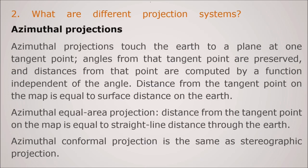What are different projection systems? There are various projection systems. Let us start with the azimuthal projection. So this azimuthal projection touches the earth to a plane at one tangent point. Angles from the tangent points are preserved and distances from that point are computed by a function which is independent of this angle. So distances from the tangent point on the map is equal to surface distance on the earth.